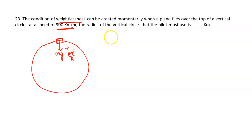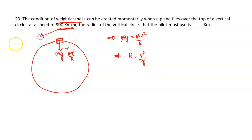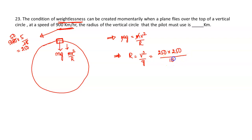Let the radius be R. Writing the force equation in the radial direction: mg = mv²/R, so m cancels and R = v²/g. Converting 900 km/h to m/s: 900 × 5/18 = 250 m/s. Therefore R = 250 × 250 / 10 = 6250 metres = 6.250 kilometres. This is the solution.